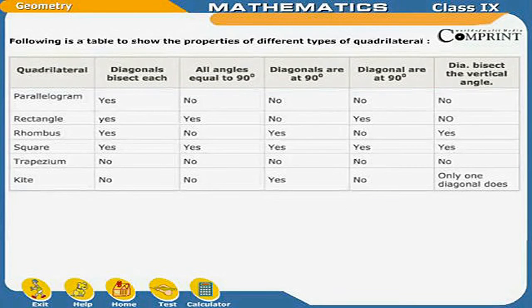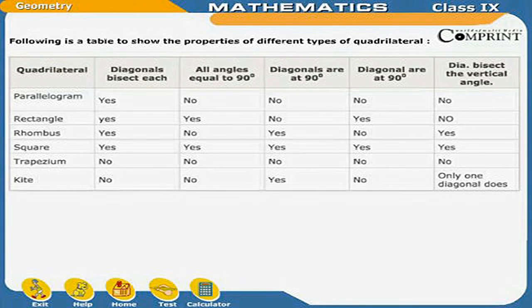Here is a table showing the properties of different types of quadrilaterals. The first column shows the type of quadrilateral. The second column: diagonals bisect each other. Third column: all angles equal to 90 degrees. Fourth: diagonals are at 90 degrees. Fifth: diagonals are equal. Sixth: diagonals bisect the vertical angle.